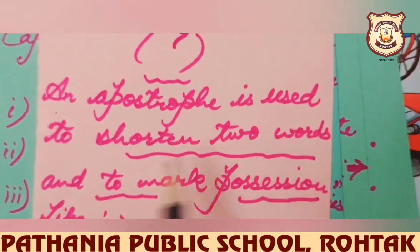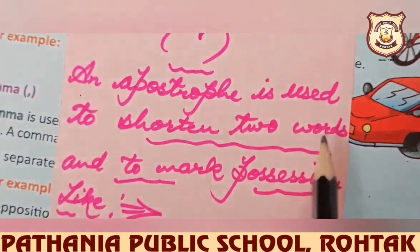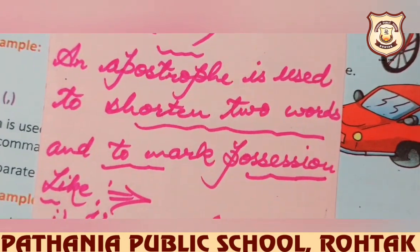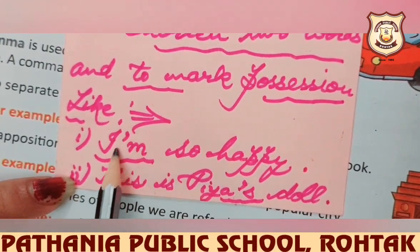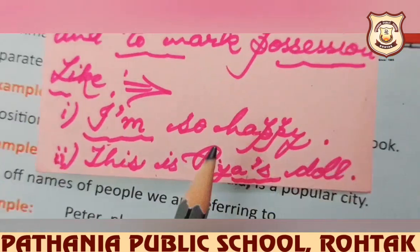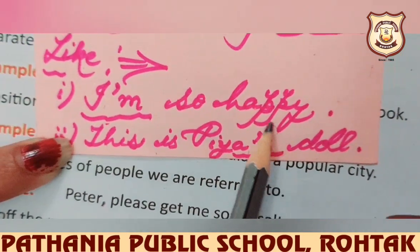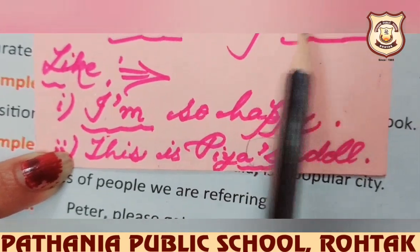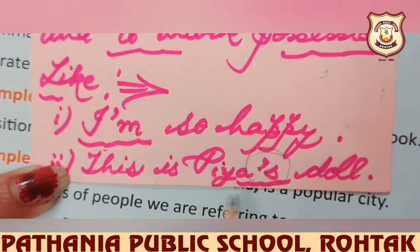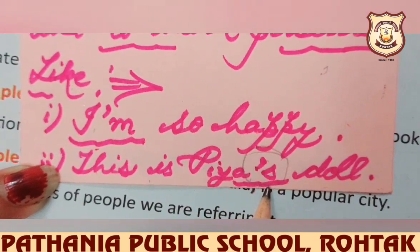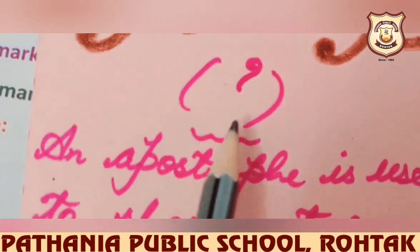Our next punctuation sign is apostrophe. An apostrophe is used to shorten two words into short forms and to mark possession. For example, 'I am' becomes 'I'm' using an apostrophe. For possession: 'This is Pia's doll' — the apostrophe shows that the doll belongs to Pia, showing belongingness. This is the apostrophe sign.